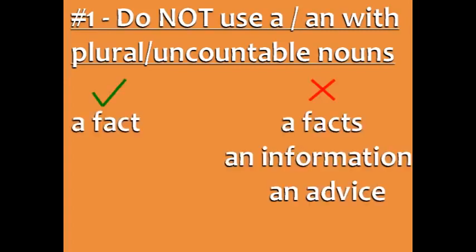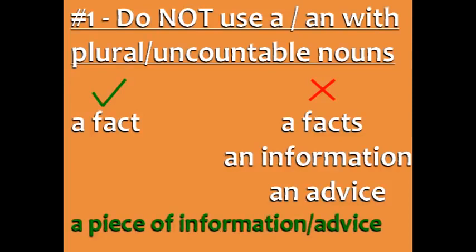For example, 'a fact' is correct because fact is singular, but you can't say 'a facts' because facts is plural. 'An information' and 'an advice' are also incorrect because information and advice are uncountable nouns. However, you can say 'a piece of information' or 'a piece of advice.'